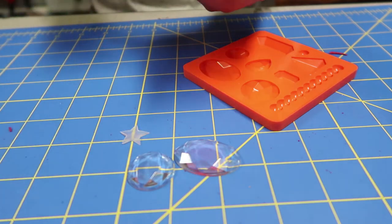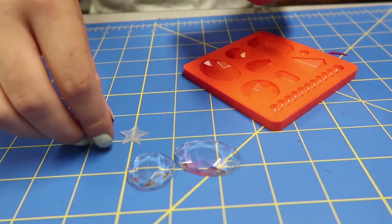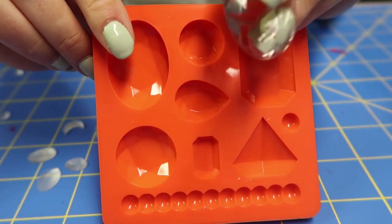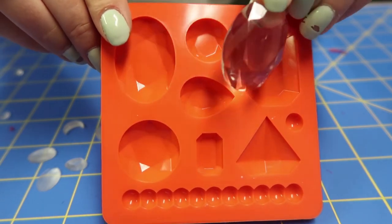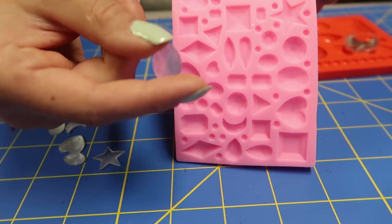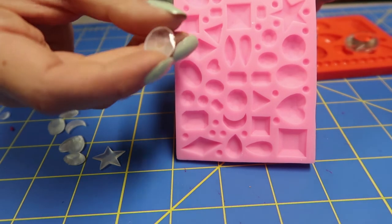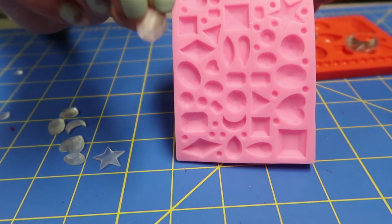Once the 24 hours is up, you can pop your gems out of the molds. The red mold I used is made of a smooth and polished silicone, so the gems came out super glossy and clear. The pink mold is a matte finish silicone, so the gems have a cloudy look to them. This is really easy to fix, though.